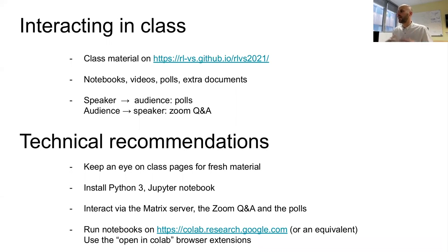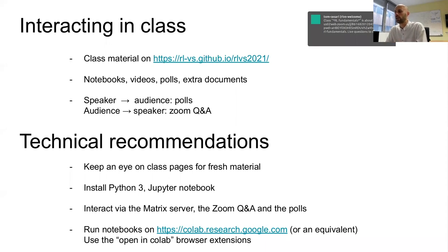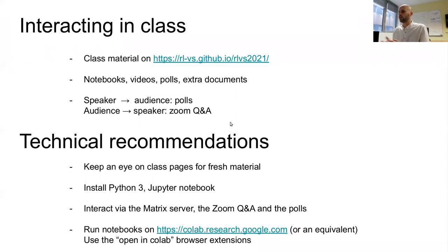Those are the main recommendations that we will probably repeat a couple of times throughout the virtual school. In terms of technical recommendations, please keep an eye out on class pages for fresh material. A lot of speakers will use Jupyter Notebooks as support for their classes, so it's generally a good idea to install Python 3 and Jupyter Notebook, or to open those notebooks on an online tool like Google Colab or an equivalent. We also recommend the use of the Open in Colab browser extension, and in general, interactions via the matrix server, the Zoom Q&A, and the polls.